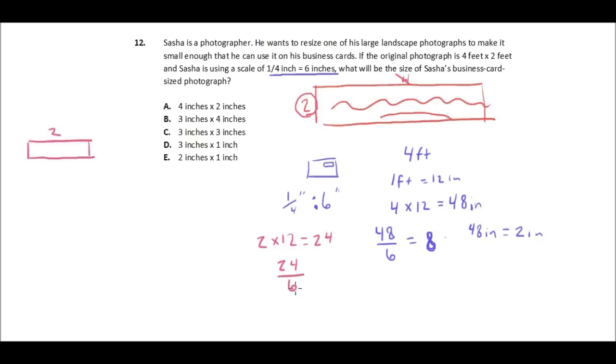We take 24, and we divide it by 6 inches to figure out how many 6 inch increments are there in 24 inches. And there are 4 6 inch increments in 24 inches, so that means there are 4 1 quarter inch increments in our smaller photograph.